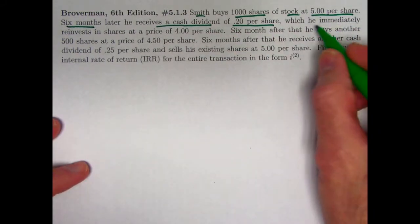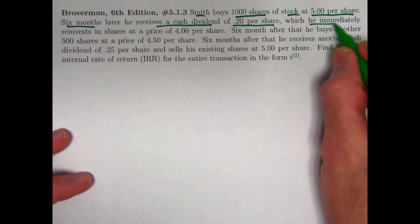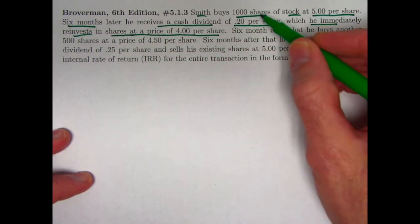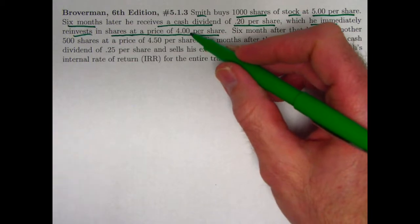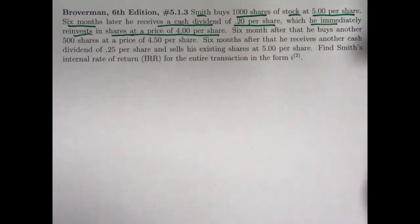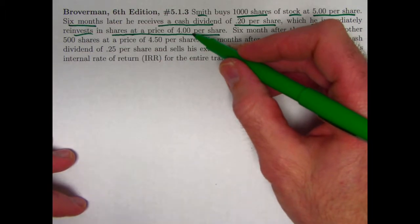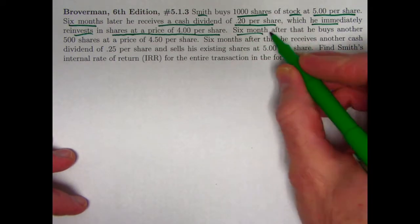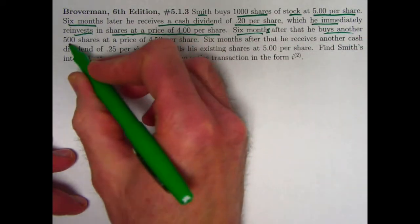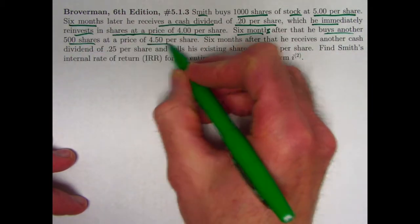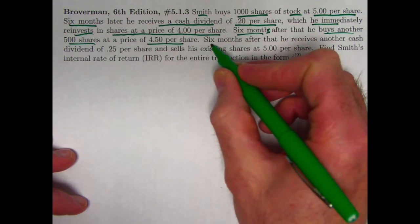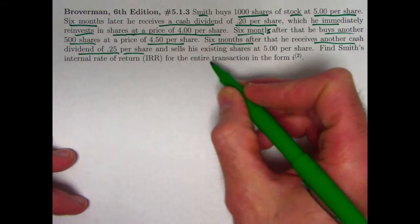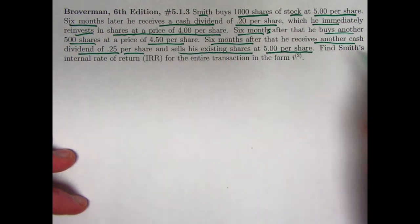Smith buys 1,000 shares of stock at 5 per share. He is becoming a part owner of that corporation. Six months later he receives a cash dividend of 0.20 per share, so that'll be 200. But he's not going to just take that home—he immediately reinvests it, buying more shares at a price of 4 per share. Since he's getting 200 in money and the price is 4 per share, he buys 50 more shares.